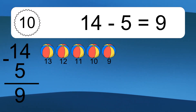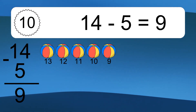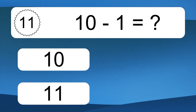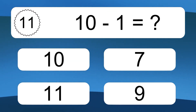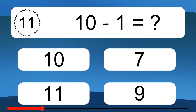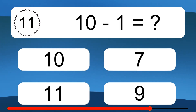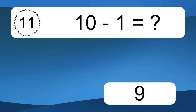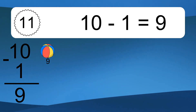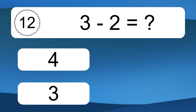14 minus 5 equals what? 14 minus 5 equals 9. Let's count it: 13, 12, 11, 10, 9. 10 minus 1 equals what? 10 minus 1 equals 9. Let's count it: 9.